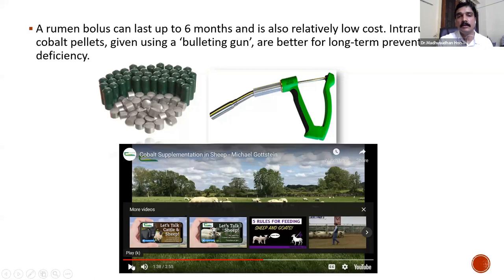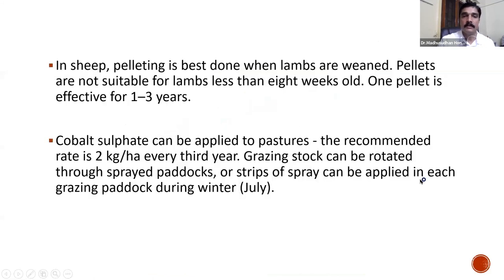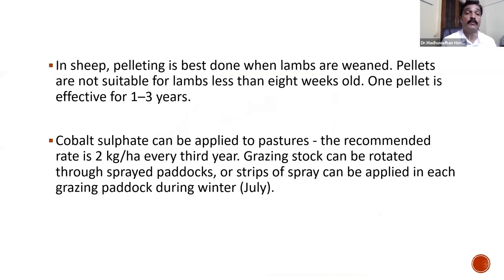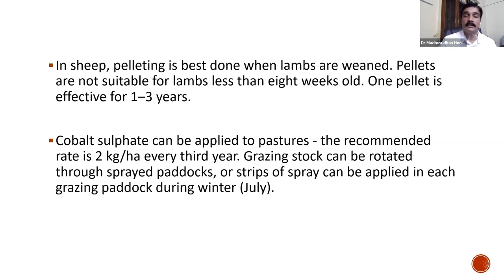In sheep, pelleting is best done when lambs are weaned. Pellets are not suitable for lambs less than eight weeks old. One pellet is effective for one to three years, allowing avoidance of cobalt deficiency for that period. Cobalt sulfate can also be applied to the pasture — up to two kg per hectare. Grazing stock can be rotated through sprayed paddocks, or strips of spray can be applied in each grazing paddock during winter.